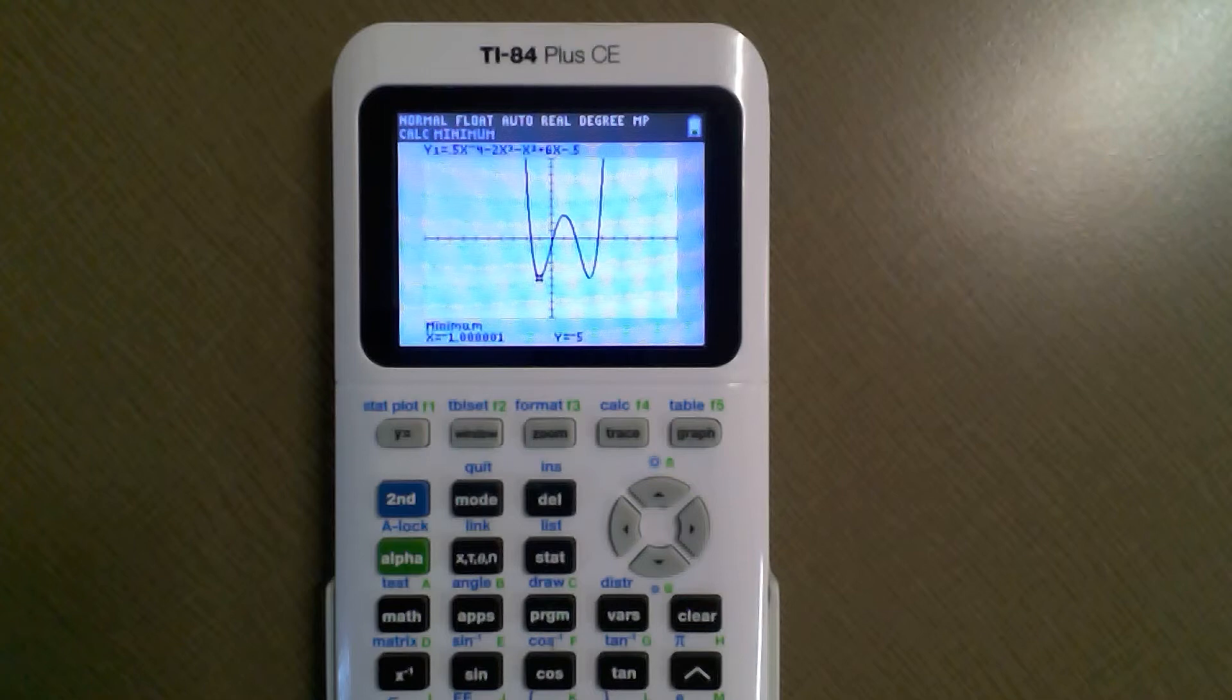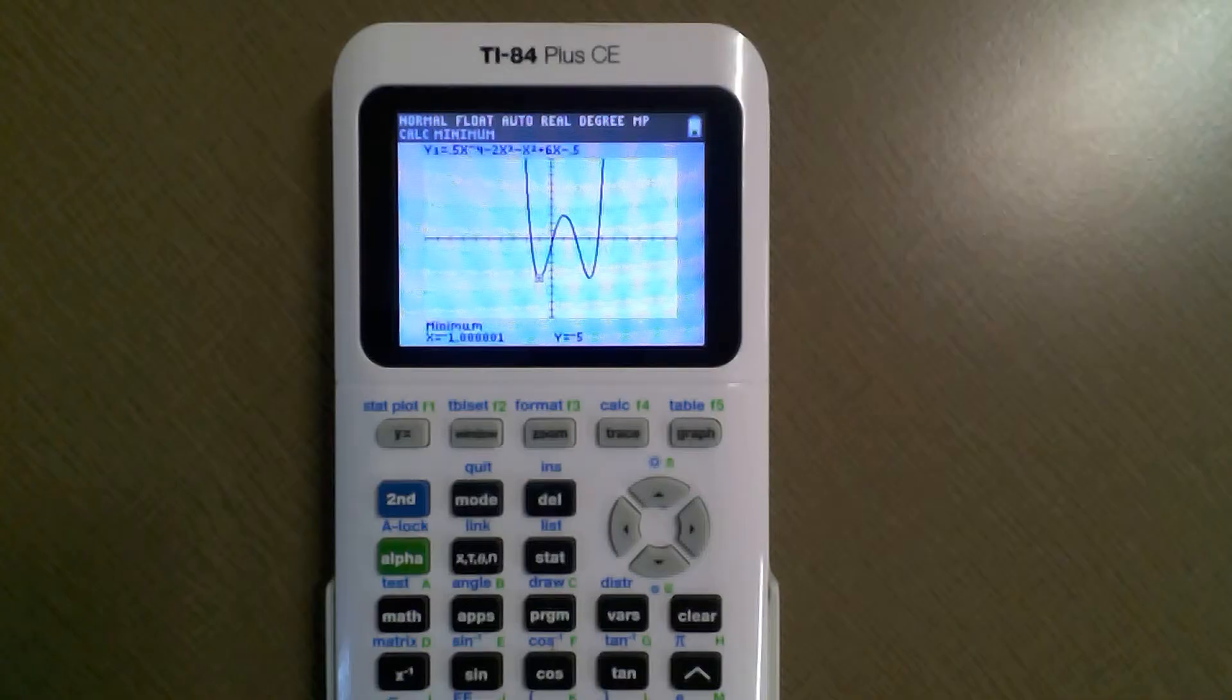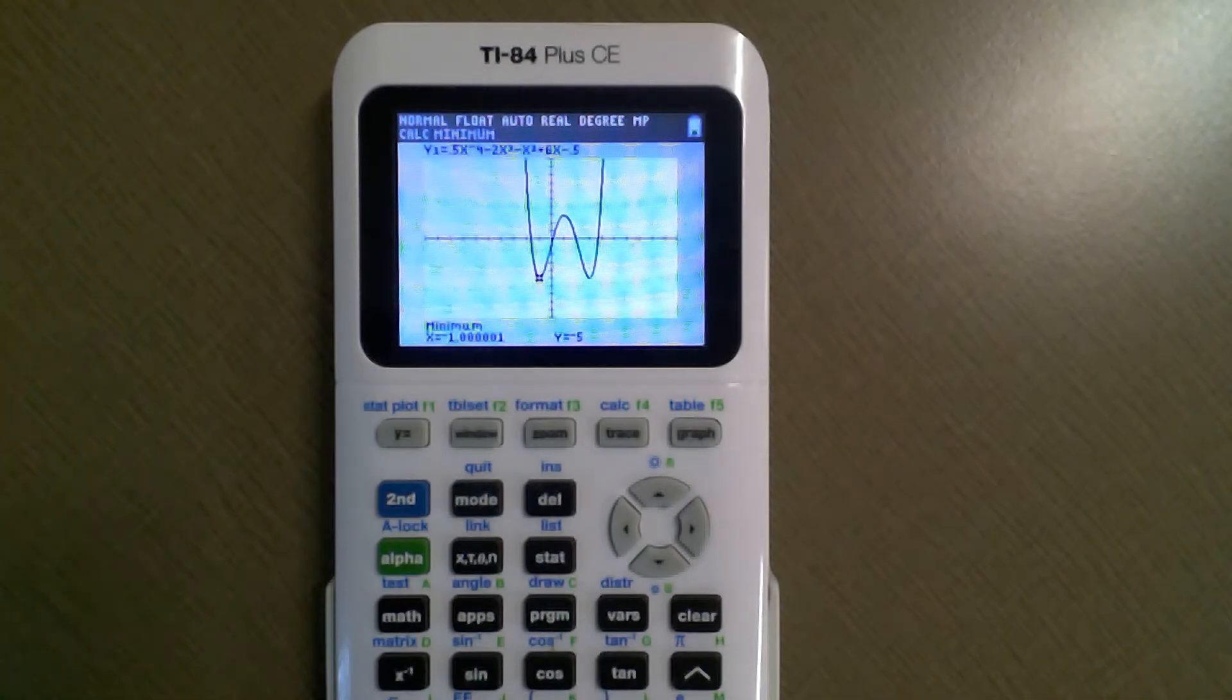You can safely assume that's negative 1. When the calculator does its algorithm to figure this out, it struggles with rounding sometimes. The minimum here would be negative 1 comma negative 5. If we want to figure out the other minimum, which is right over there, we would do the same thing.